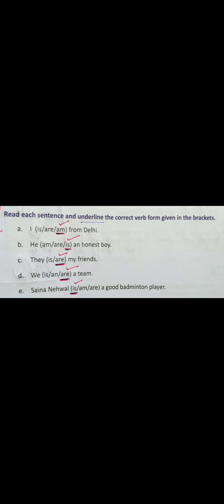Next one. We, our team. Three options: is, an, are. An is absolutely wrong option. Clear? We, our team. We - plural noun, so we will use are. Clear? We are our team.